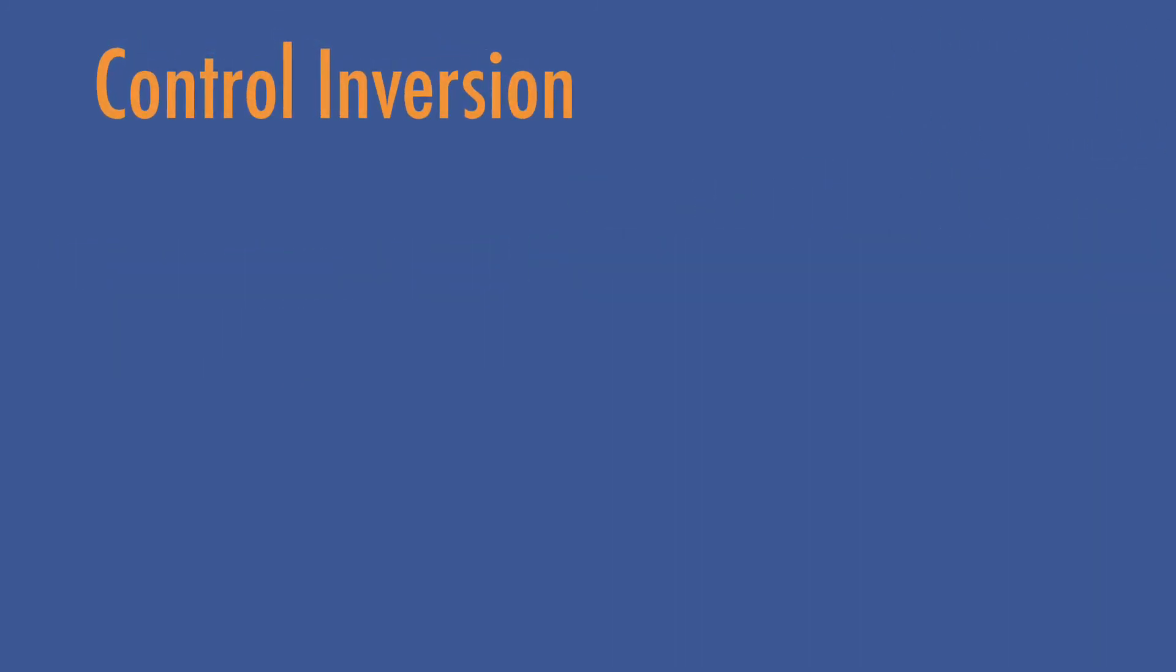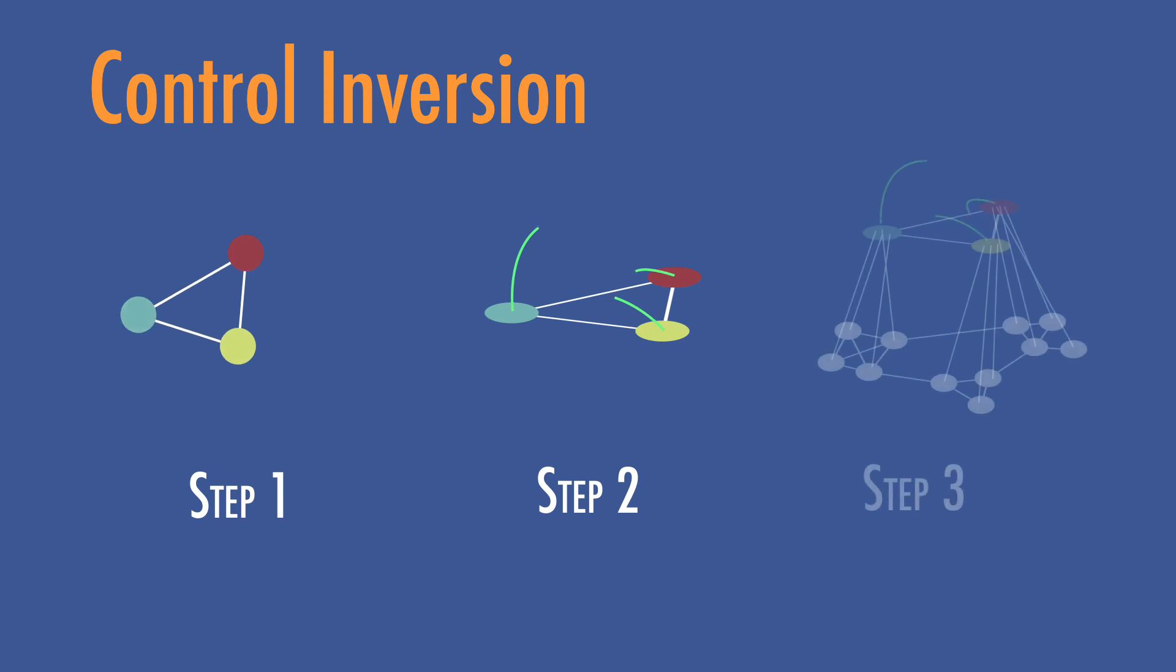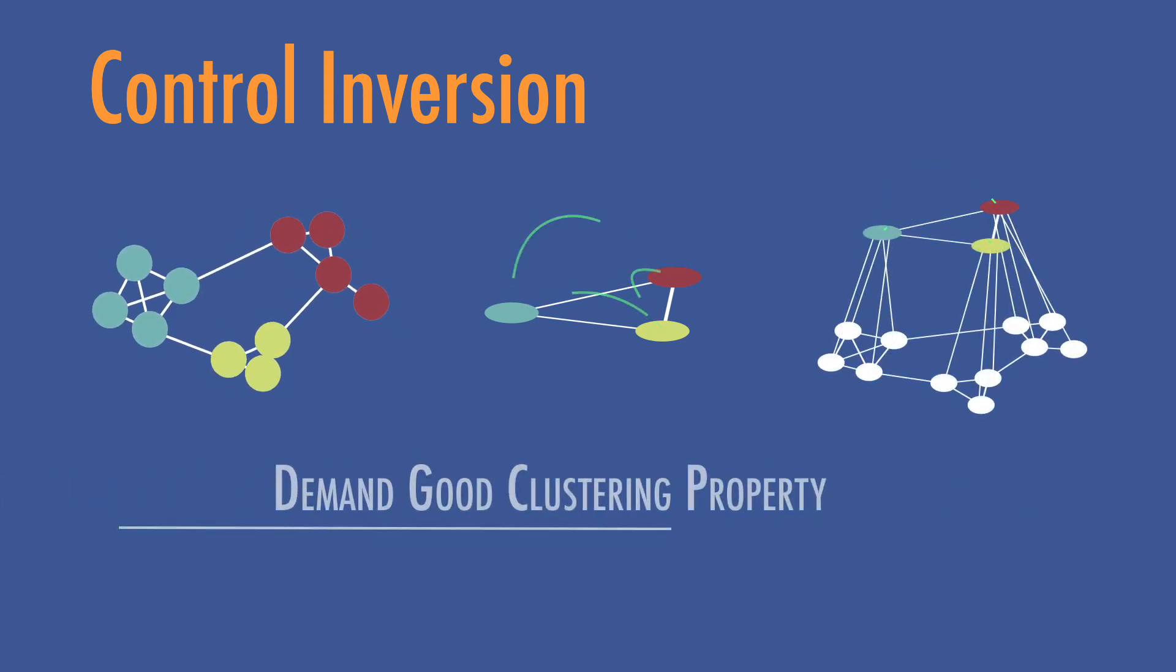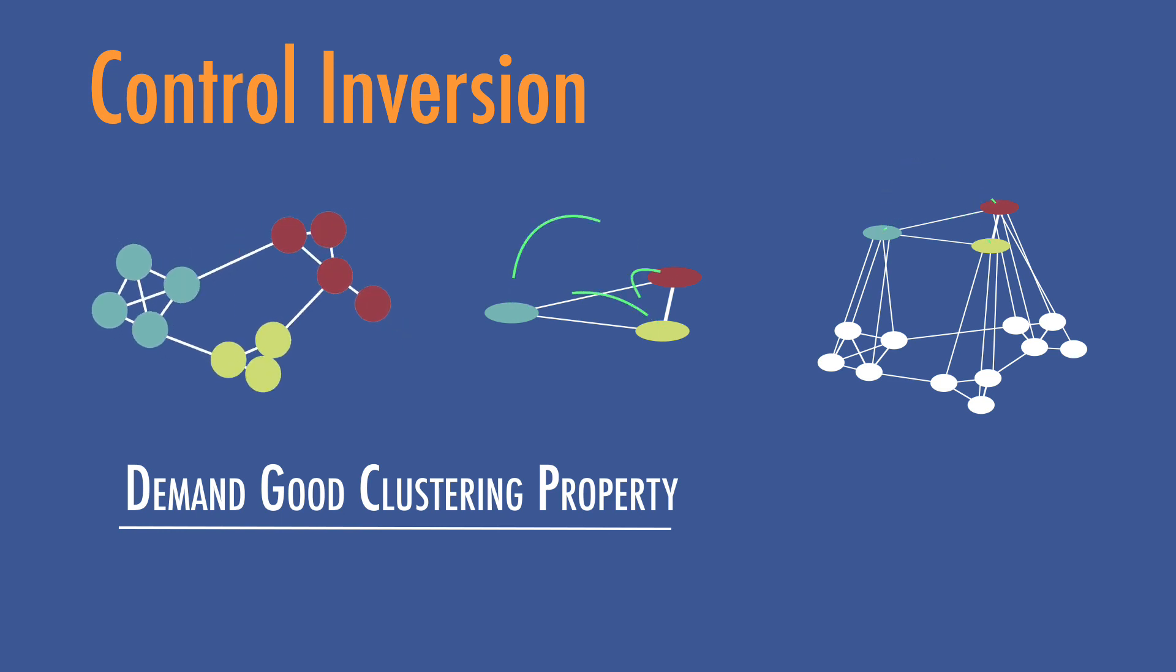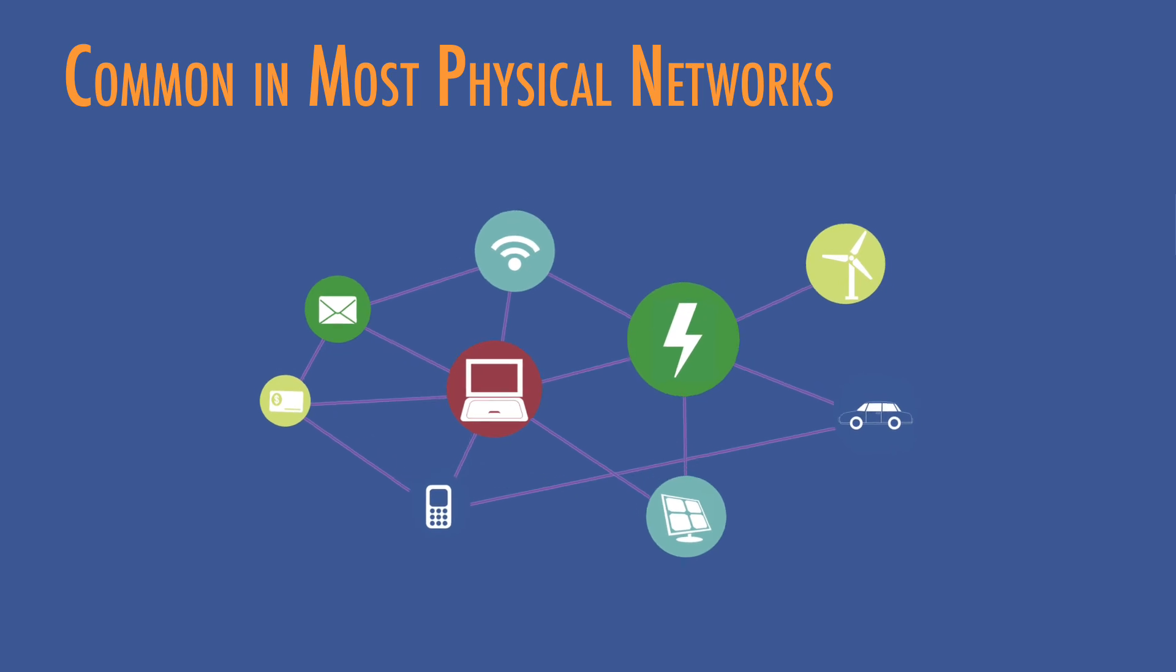Our proposed idea of control inversion is a promising tool for controlling any cyber-physical system that suffers from the curse of dimensionality. While, of course, the applicability of this approach demands that the original network exhibits sufficiently good clustering, such properties are common in most physical networks around us.